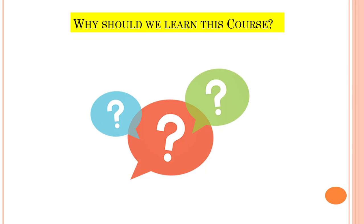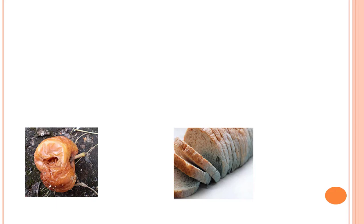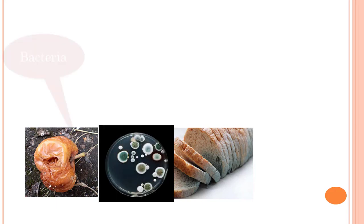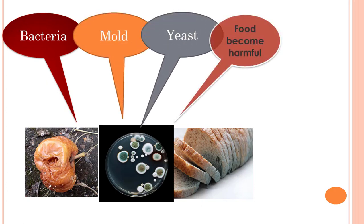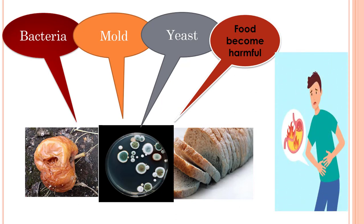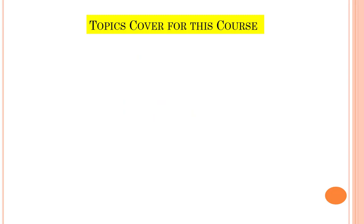At the beginning, why should we learn this course? If I give one example, it will be clear. We can see some spoiled food — the reason for spoilage is bacteria, mold, or yeast. If we consume this food, it can create some unpleasant situations for our body. So we should prepare food that will be safe for our consumers. That's why we have to learn this course.